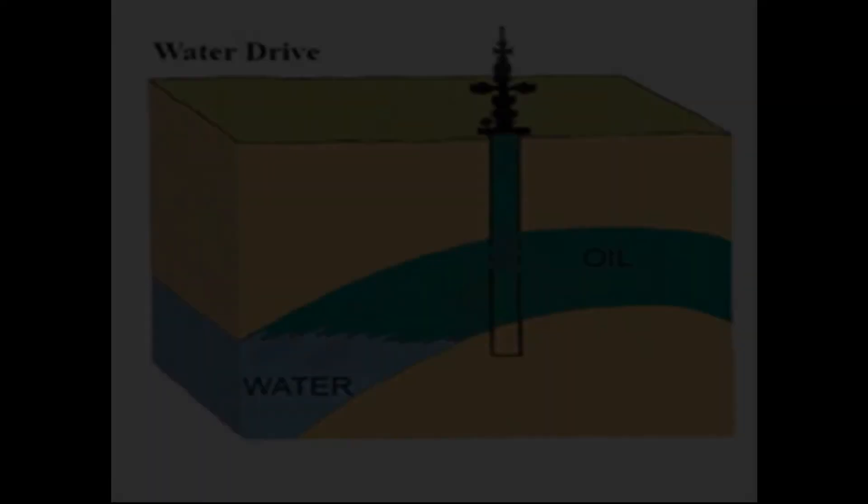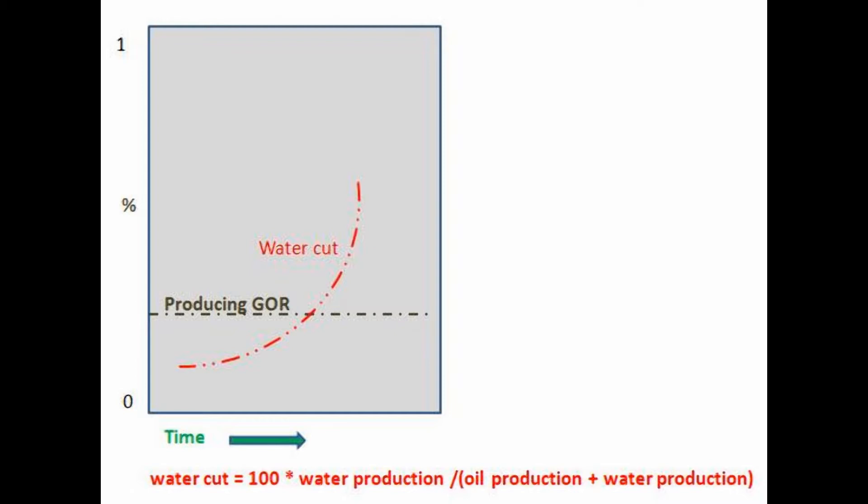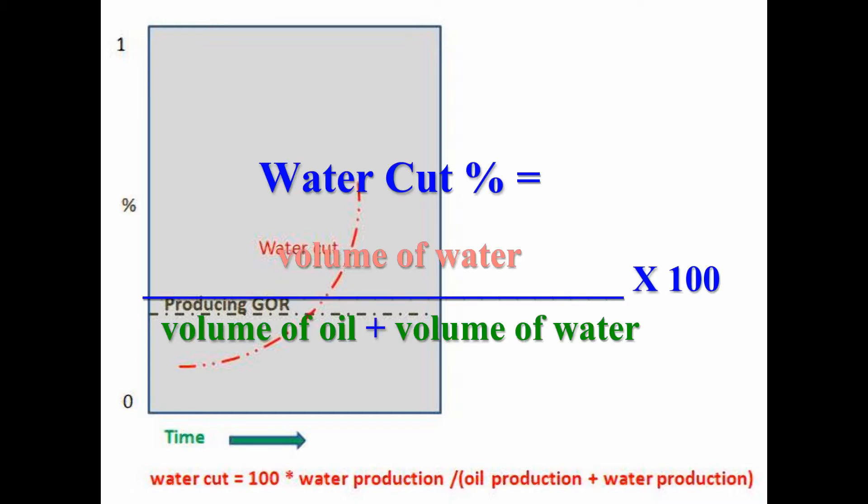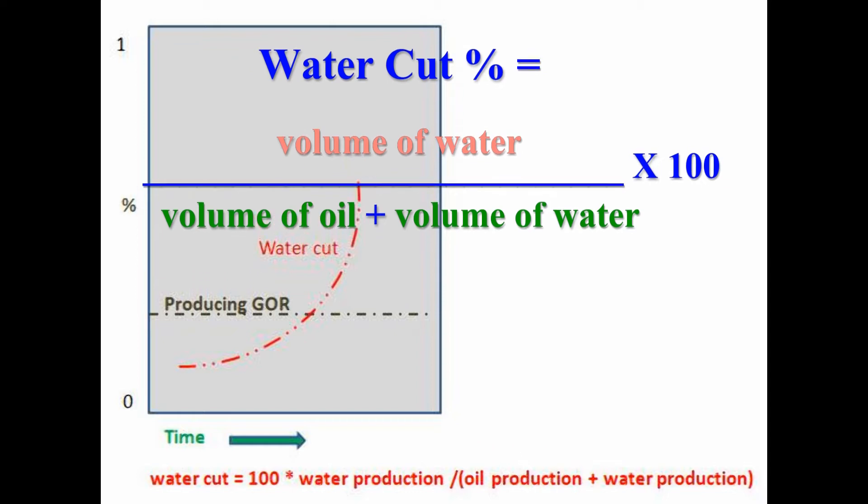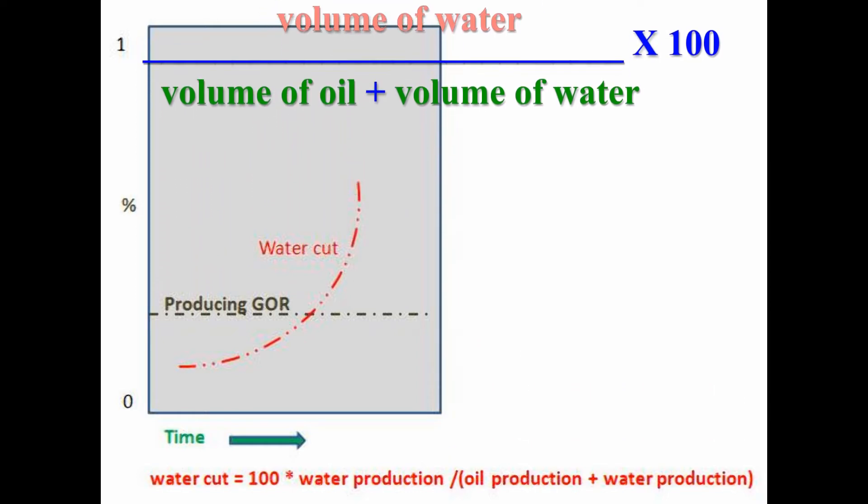We refer to the water production as the water cut. The water cut percentage is equal to the volume of water produced divided by the sum of the volume of oil produced plus the volume of water produced times 100.